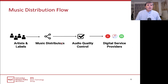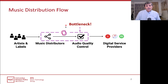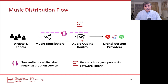A music distribution company acts as an intermediary between artists or labels and big digital service providers like Spotify, Amazon Music, or iTunes. Within that process, one key task is audio quality control — and that's what Sonosuite does. It's clearly a bottleneck because most of it is done manually, with people listening and reviewing music to make sure it meets the standard that a particular digital service provider requires.